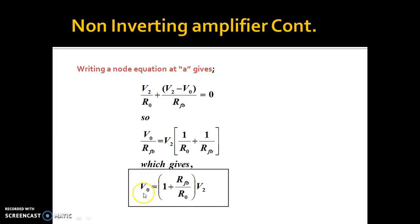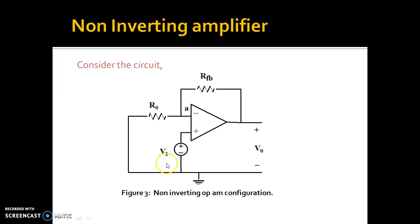And so, we will have an equation like this. V0 is a function of 1 plus R0 by RFB times V2. And here, you can see there is no negative sign. That means whatever the signal we have applied to this terminal, the phase of the output voltage will be same. That's why it is called non-inverting. That means it is not inverting the signal.